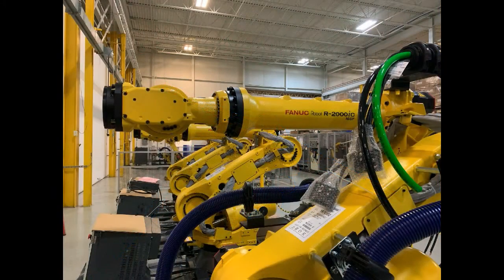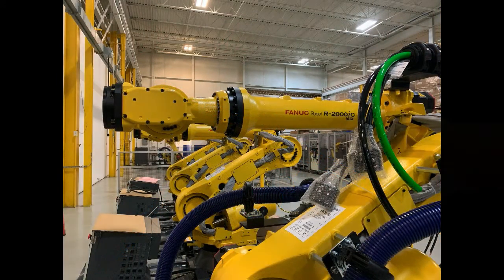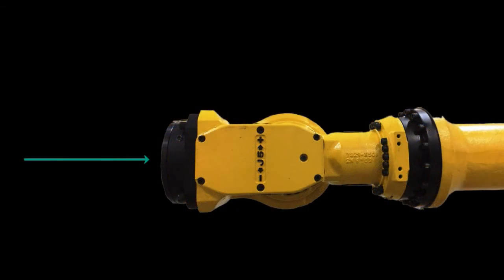When a robot first comes into the world, its tool center point is the faceplate of the robot, the rotating disc at the end of joint six.